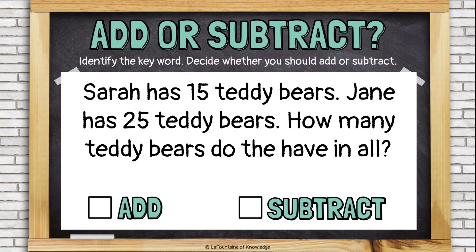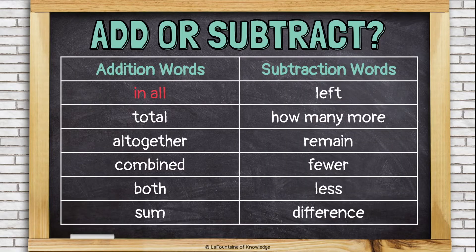Sarah has 15 teddy bears. Jane has 25 teddy bears. How many teddy bears do they have in all? 'In all' usually means to add — it means to put Sarah's teddy bears and Jane's teddy bears together to find out how many total teddy bears there are in all. In all is usually an addition keyword.